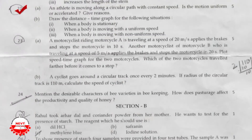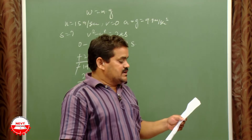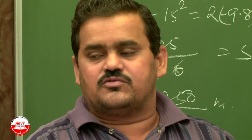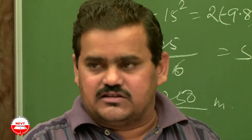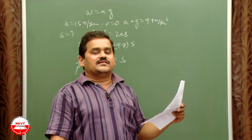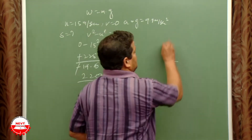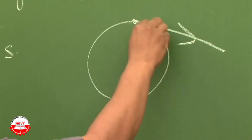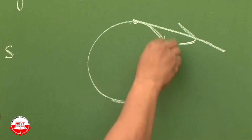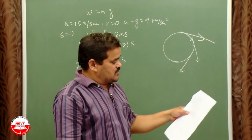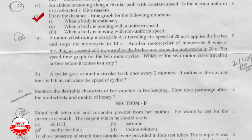Question 22: an athlete moves along a circular path at constant speed — is the motion uniform or accelerated? The motion is accelerated. In circular motion, at every moment the direction changes. Velocity has both magnitude and direction; since direction constantly changes, the motion is accelerated even at constant speed.